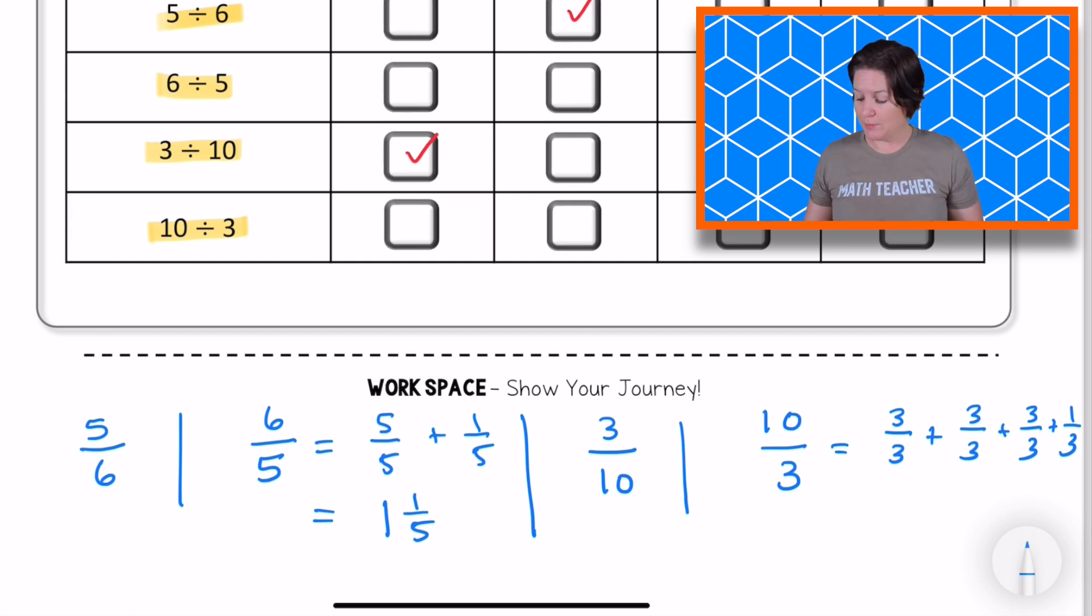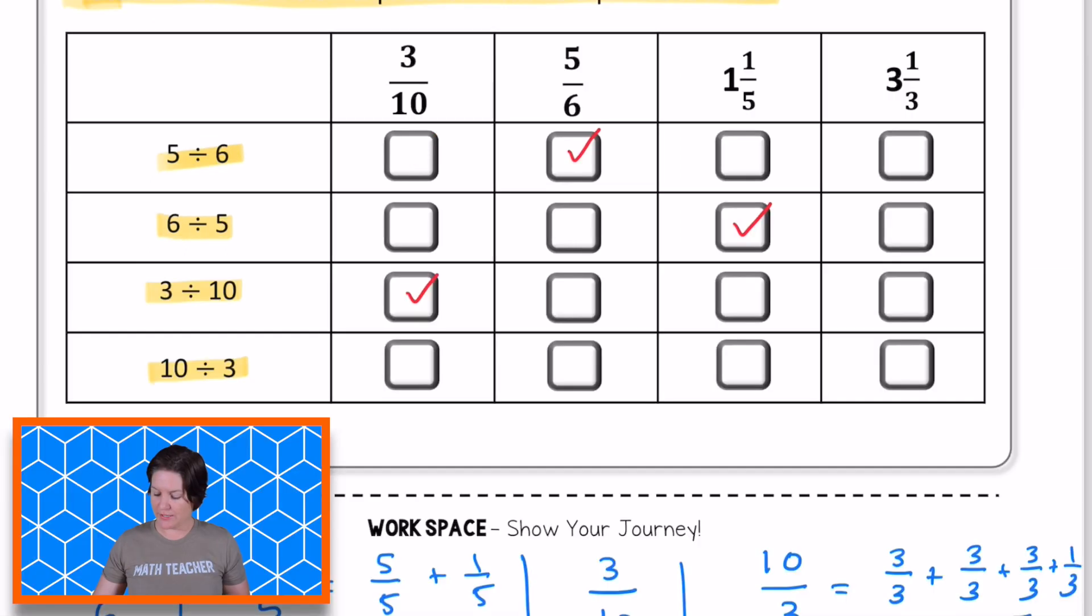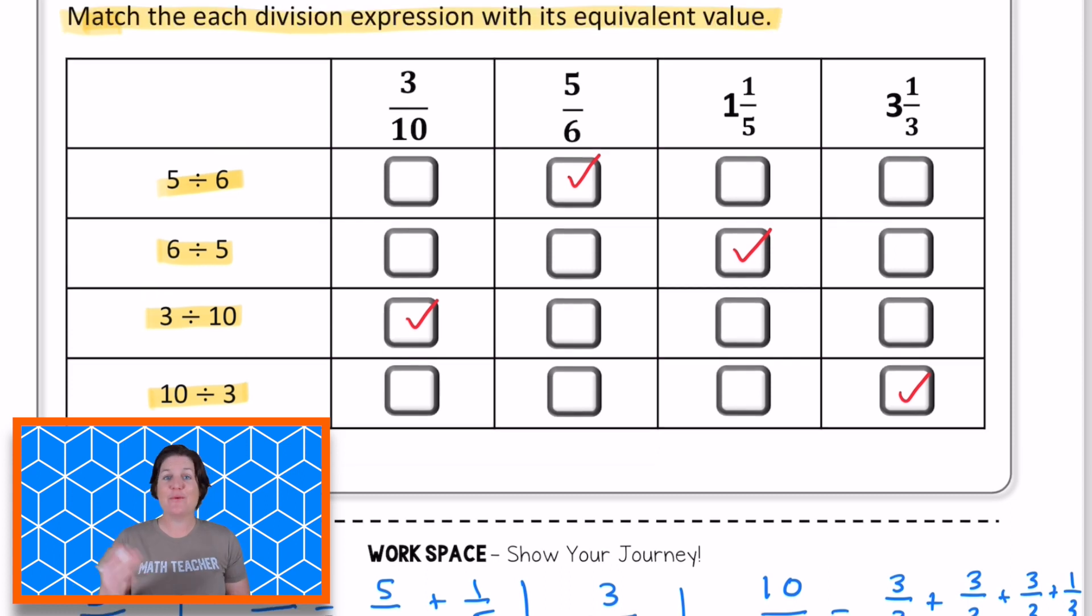So because of that, that would be one, two, three wholes, three wholes and one third. So mark that one. And that is how it is done.